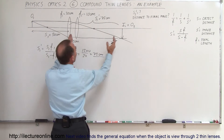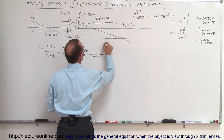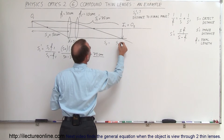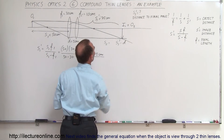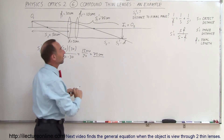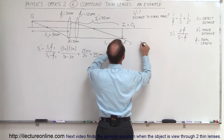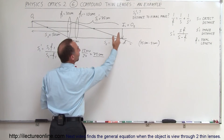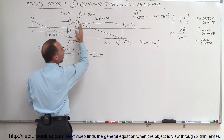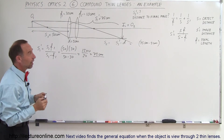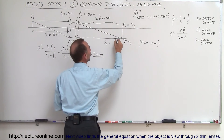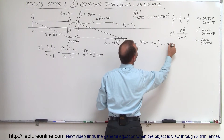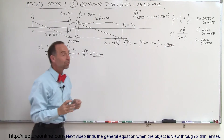S2 equals S1 prime minus the distance between the two lenses, giving us 75 minus 5 centimeters. However, since the object is behind the second lens, it is a virtual object, and a virtual object has a negative object distance. So we place a negative in front, making S2 equal to negative 70 centimeters — that is the object distance for the second lens.